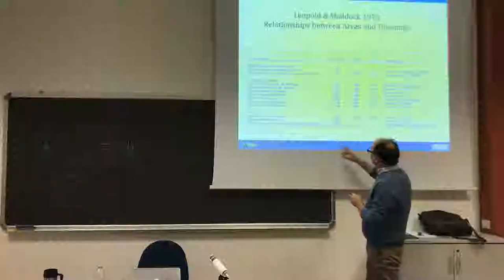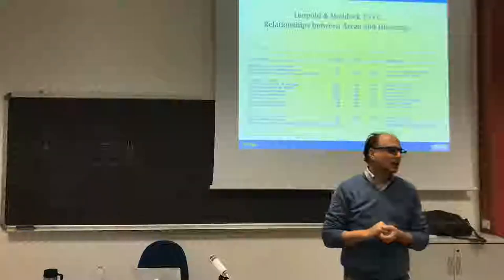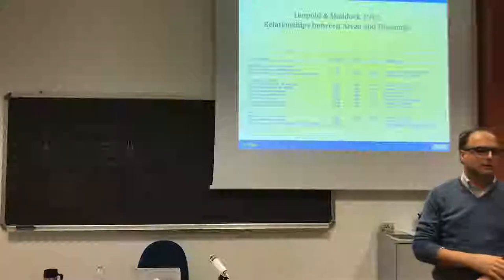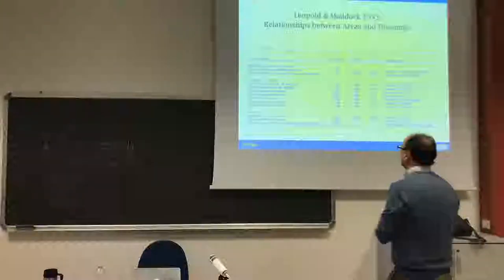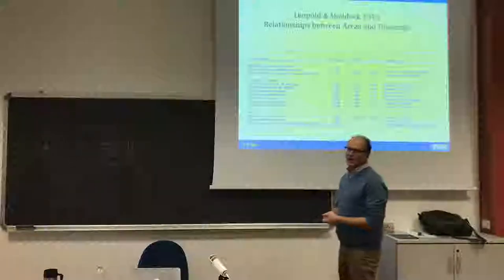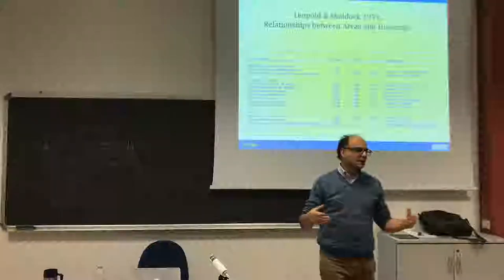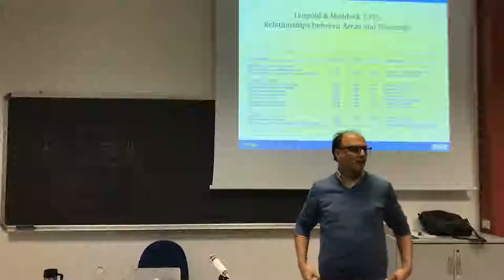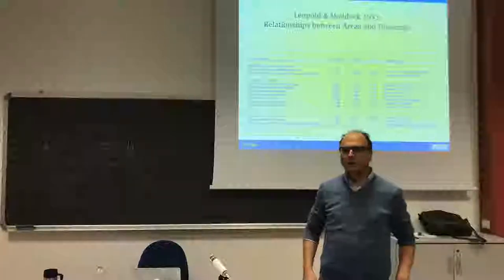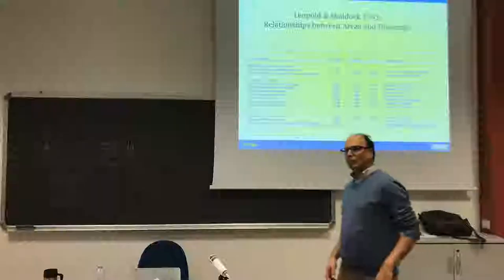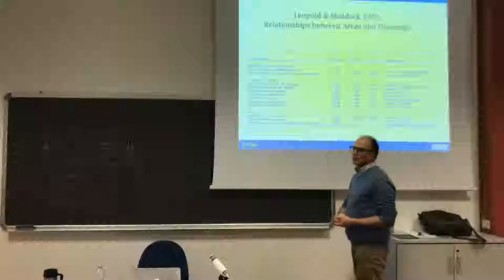At the same time, we also observe another particular thing, which is that the width of a river stream seems to be related to the square root of the contributing area. This is the statistic by Leopold and Maddock, and others have taken the statistics of many rivers in the world, and this relationship fits for most rivers. So this is the kind of thing that should be explained.